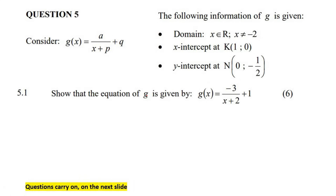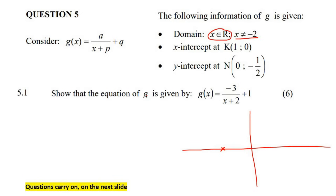Here's an x and y-axis. They're saying that the domain of this hyperbola is anything except negative 2. So we go to negative 2 and put a dotted line through that — that's your vertical asymptote at x equals negative 2. We then have an x-intercept at (1, 0), and a y-intercept at (0, -½).